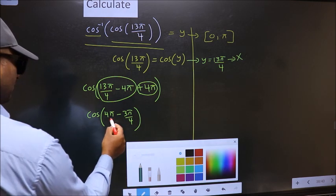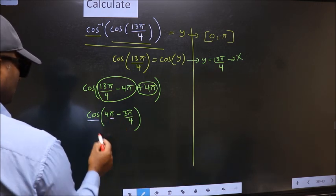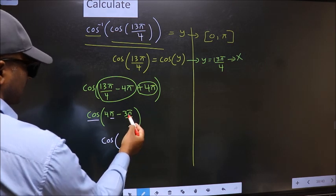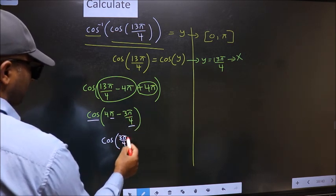Next. Here we have π. So cos is not going to change. It will remain cos. And inside we get this angle 3π by 4.